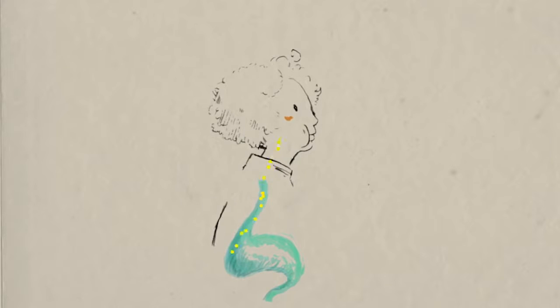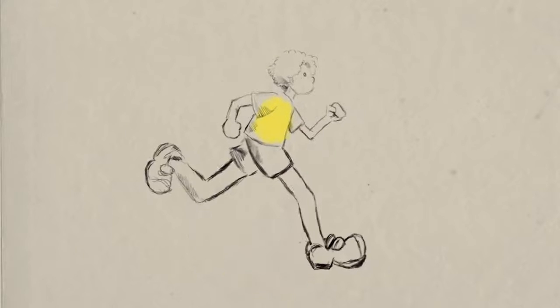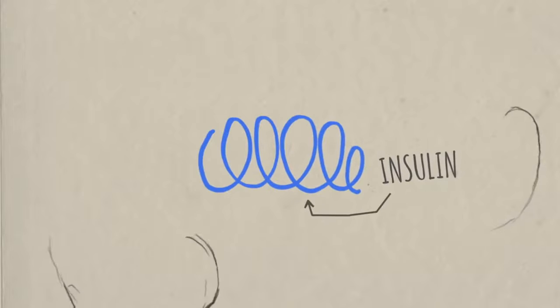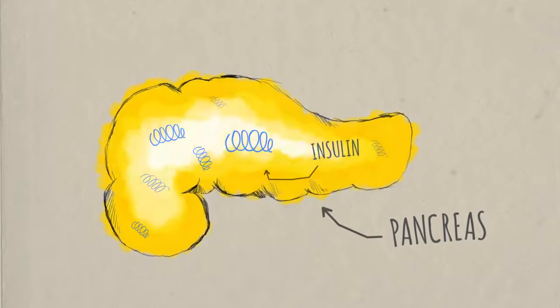When sugar moves from the digestive tract to the bloodstream, your body kicks into action to transfer it into your tissues, where it can be processed and used for energy. Insulin, a hormone synthesized in the pancreas, is one of the body's main tools for sugar management.